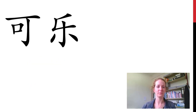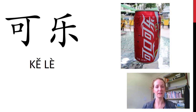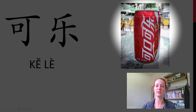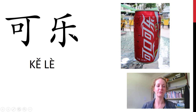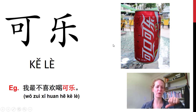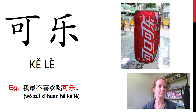我不喜欢. 这是什么? Now we get into the soft drinks. 这是可乐. 可口可乐 — you can see on the bottle 可口可乐. This is about the sound, but it also means something like happiness in your mouth — lots of 口 in there and 乐 from happiness. 我最不喜欢可乐。你呢?